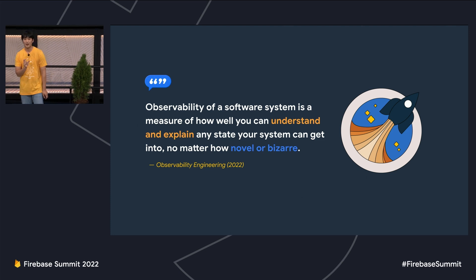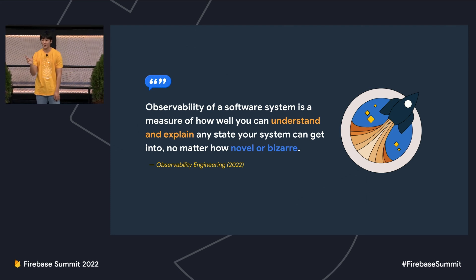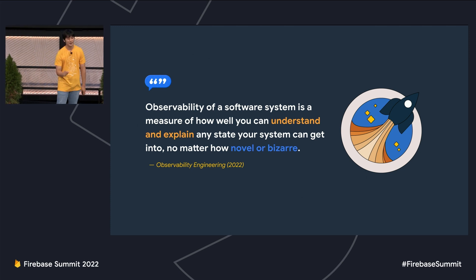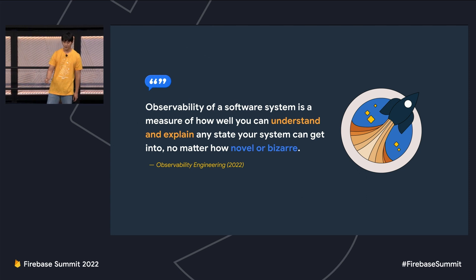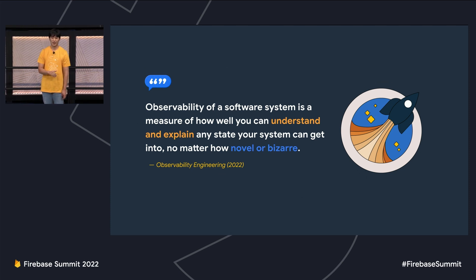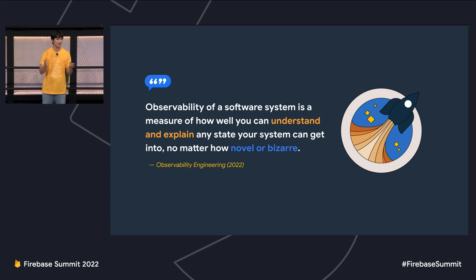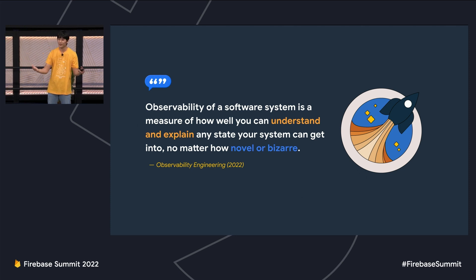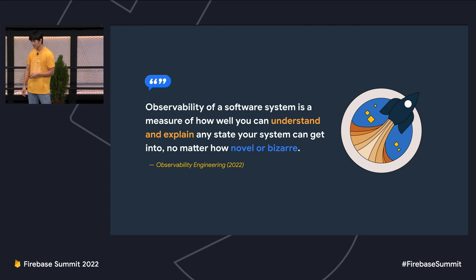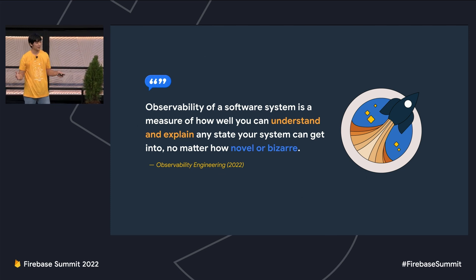This is where the concept of observability comes in. It's such a new hot topic I couldn't find an Oxford Dictionary definition for it, but there was a book published earlier this year called Observability Engineering with a great definition: observability of a software system is a measure of how well you can understand and explain your system, no matter how novel or bizarre. Observability is not a set of technology or checkboxes — it's a relationship between you as the operator and the software running in production. If it's not making sense to you, then it's not observable.